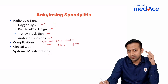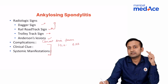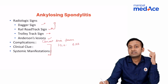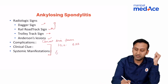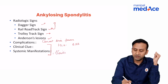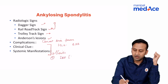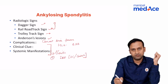Ankylosing spondylitis also has systemic manifestations. The important ones to remember are uveitis and inflammatory bowel disease — either ulcerative colitis or Crohn's disease can be associated with ankylosing spondylitis.